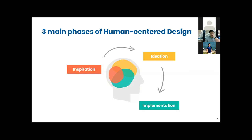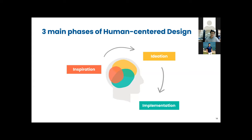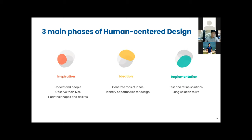The process is simple: inspiration, ideation, and implementation. You observe how people do things and use a product, then generate ideas to identify opportunities for design, then implement, test, and go back to the inspiration stage. It's very much the design thinking process we know today.